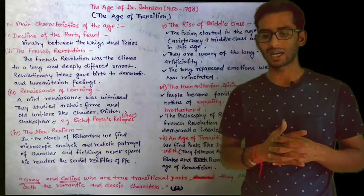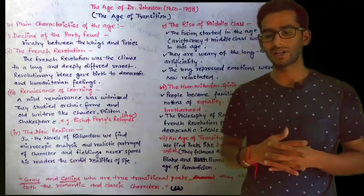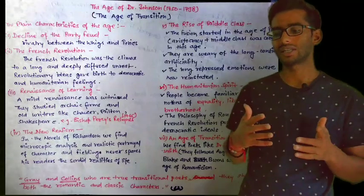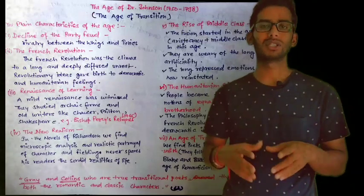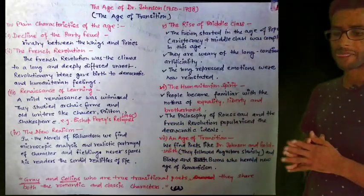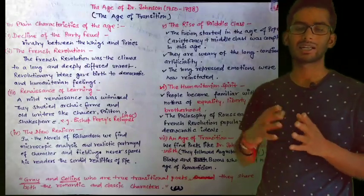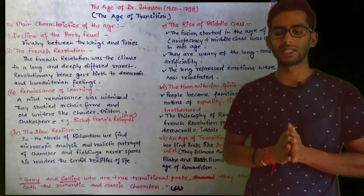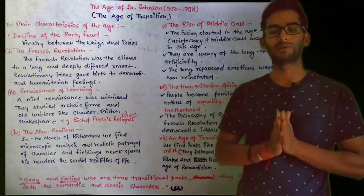The philosophy of Rousseau and the French Revolution popularized democratic ideals. In this age of transition we find writers like Dr. Johnson and Goldsmith who followed Augustan traditions slavishly, while Blake and Burns heralded the new age of Romanticism. Gray and Collins are the true transitional poets — they share both romantic and classic characters and can be considered the true representatives of this age.